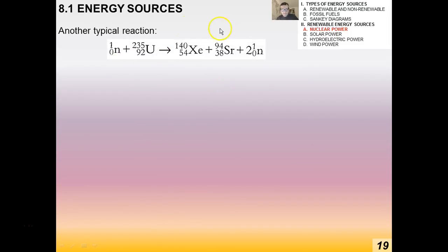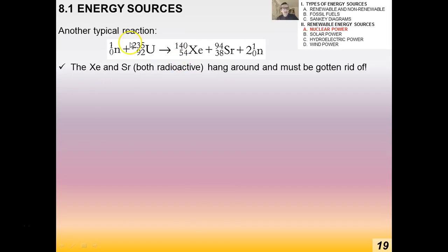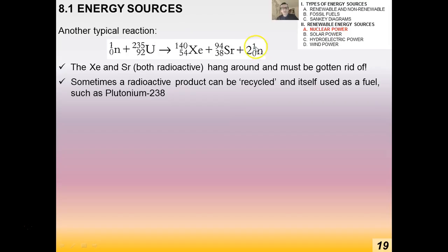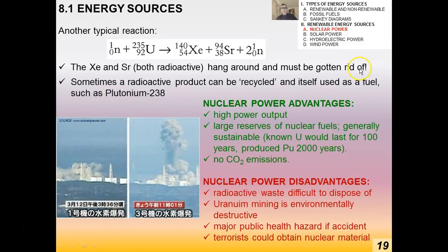Another typical fission reaction produces two extra neutrons that continue the chain reaction. Importantly, the products of fission are themselves radioactive and must be disposed of — a major downside of nuclear power. Sometimes a radioactive product can be recycled as fuel; plutonium is a good example. The most recent major nuclear issue in the news was the Fukushima, Japan nuclear reactor disaster after the tsunami.